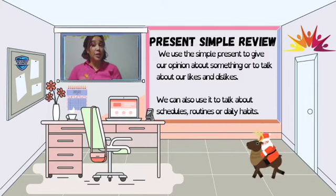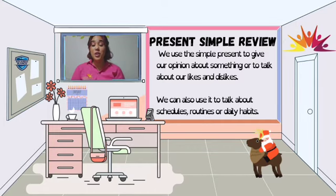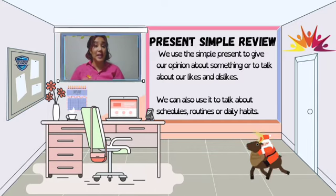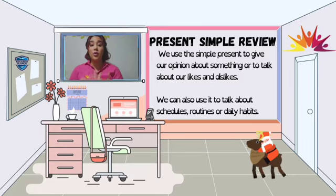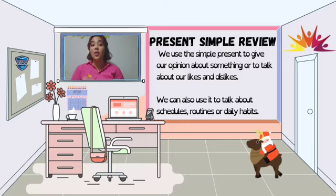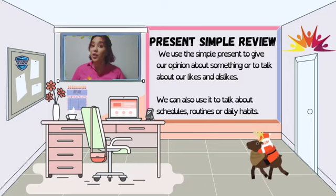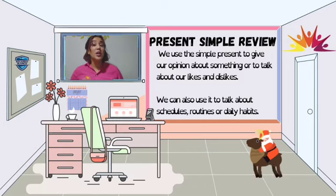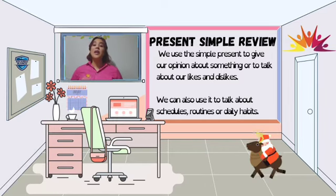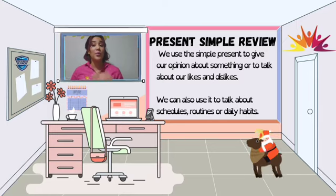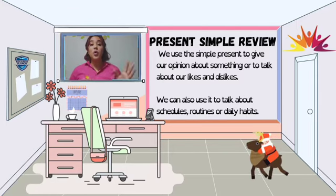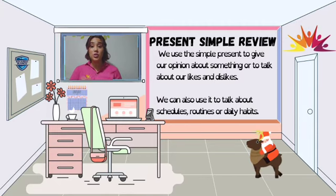We use the present simple to give our opinions about something, or to talk about our likes and dislikes. Primero vamos a recordar que utilizamos el presente simple para dar nuestras opiniones sobre algo, o para hablar sobre las cosas que nos gustan, las cosas que no nos gustan, lo que disfrutamos, aquello que no, y hablar sobre lo que son cosas que hacemos generalmente.